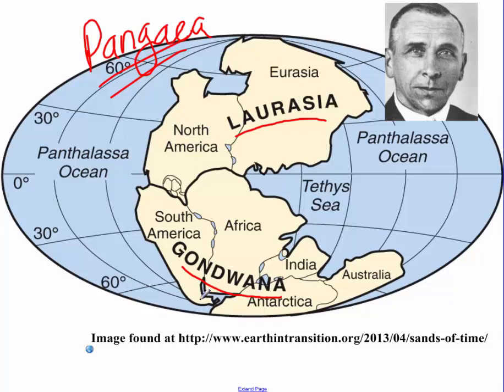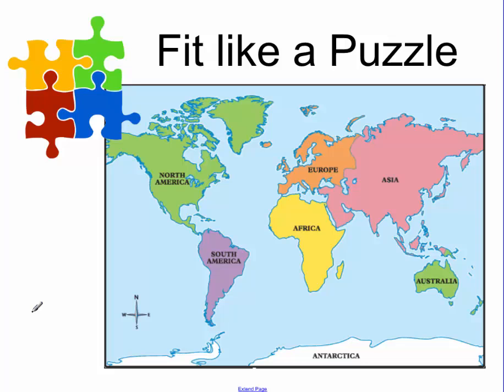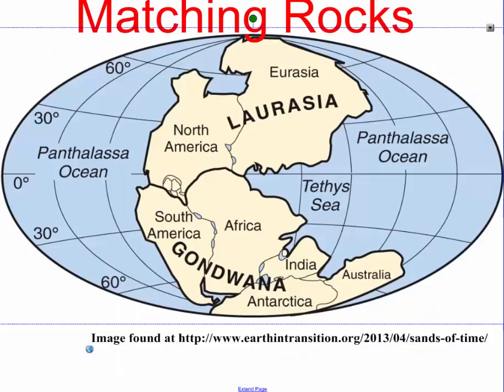His theory was not very widely accepted at the time, but we've since discovered a lot more evidence that helps to support it. The first thing Alfred Wegener noticed was something you may have already noticed when you were young — the continents fit together like a puzzle. If you look at South America and Africa, it looks like they would fit really well together, so you could propose that they once were connected.